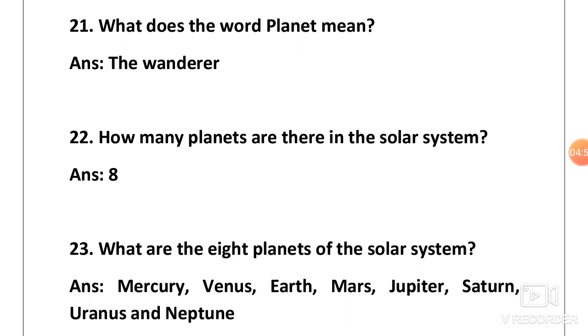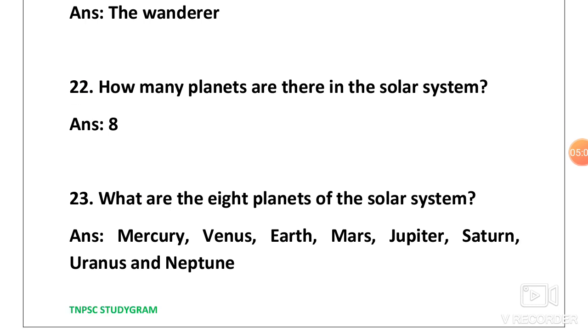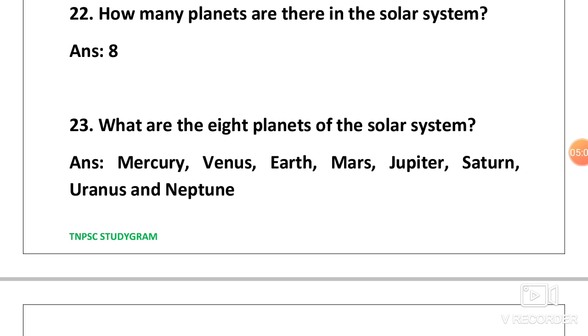Next one, what is the word planet mean? Answer is the wanderer. As we know, the planet keeps on moving. Next one, how many planets are there in the solar system? Answer is only 8. Don't confuse, because Pluto belongs to the dwarf planet.